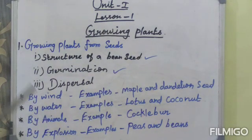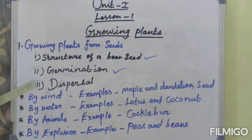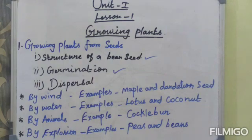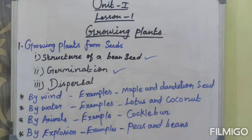Third: dispersal by animals. Seeds of some plants such as cocklebur have spines or hooks. These seeds stick to the bodies of animals and birds and are thus carried away from the parent plant. Fourth: dispersal by explosion. Explosion means burst open. The fruits of some plants such as peas and beans burst open when they are ripe, scattering the seeds in all directions. This method of seed dispersal is called explosion.